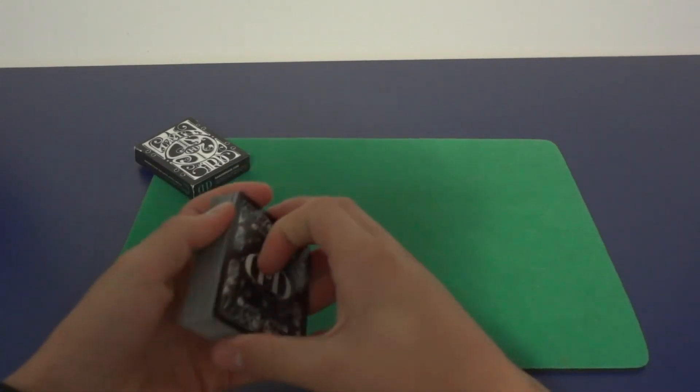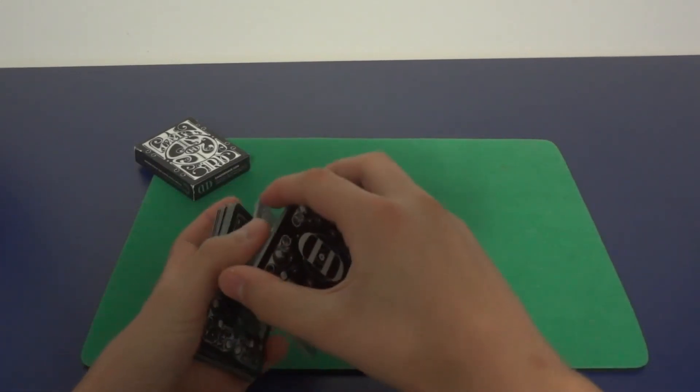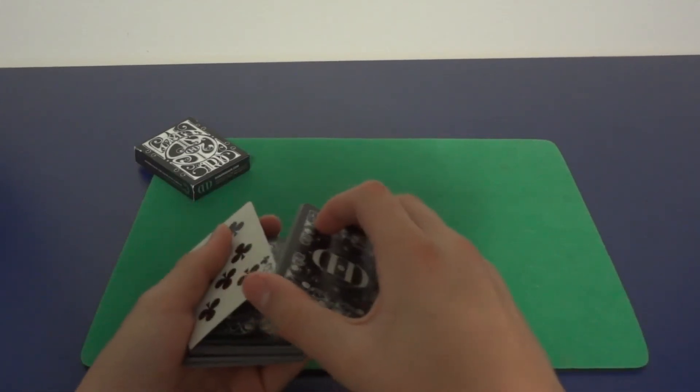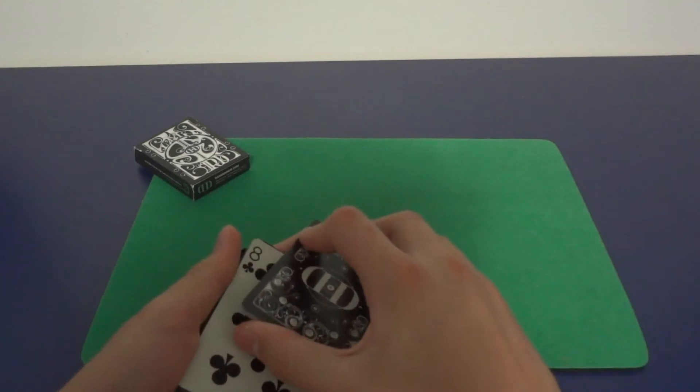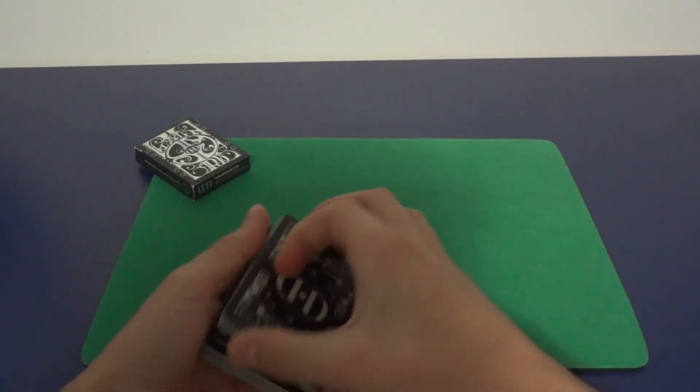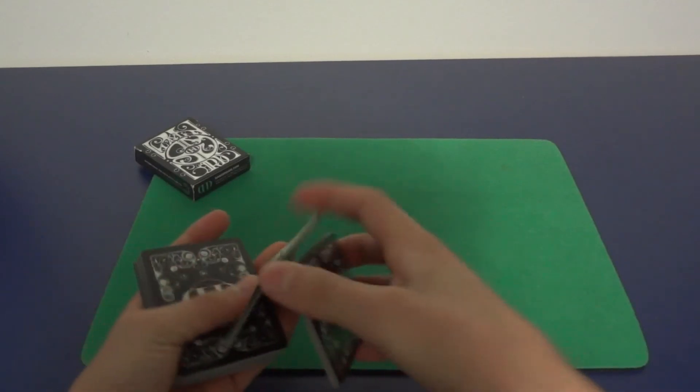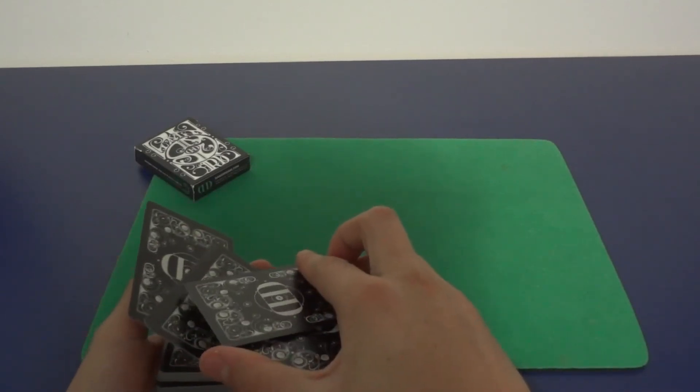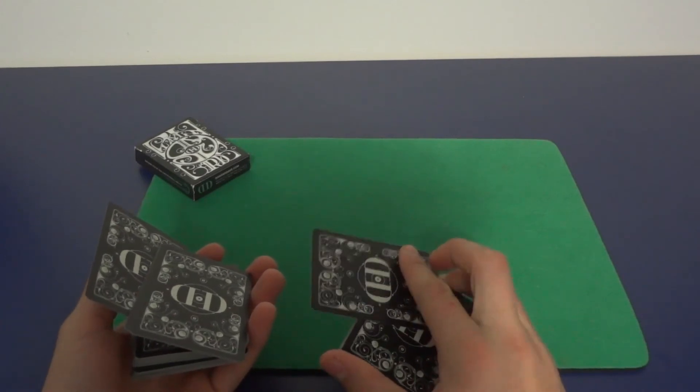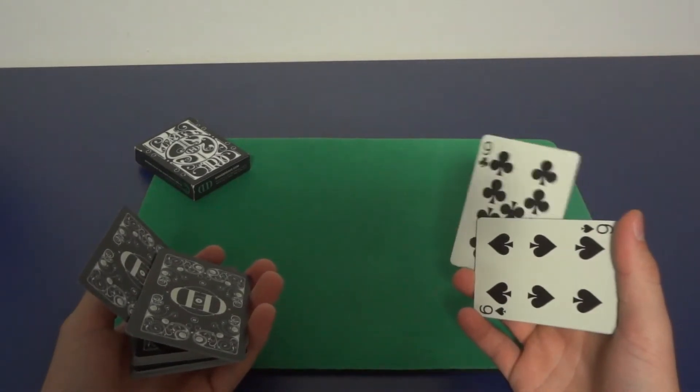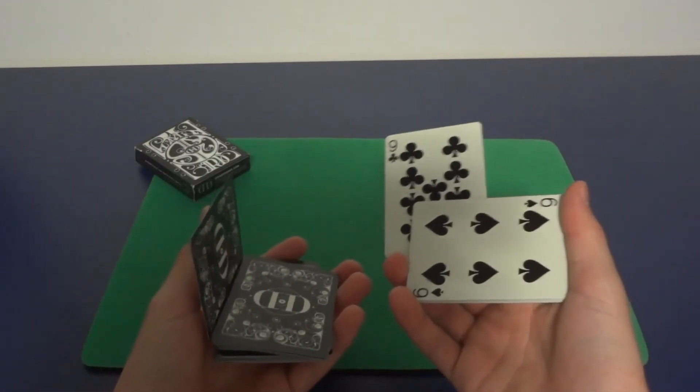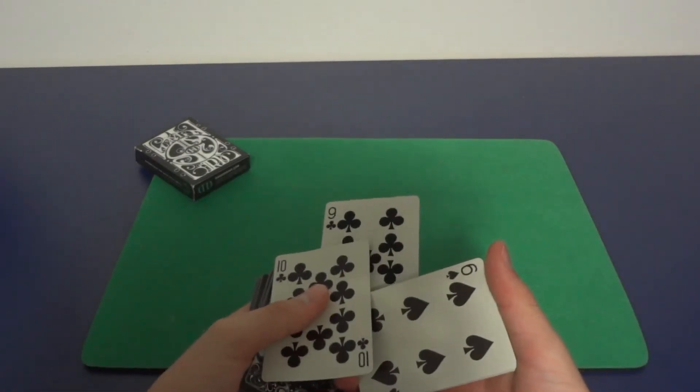So while that is happening, you're going to push off the top card with your pointer finger and it's going to go against your ring finger. You're going to slide that card under the card that just fell, like the one that you pushed out with your left hand.